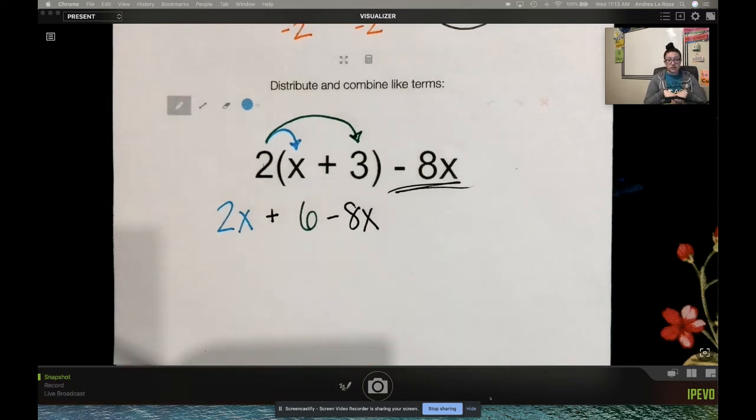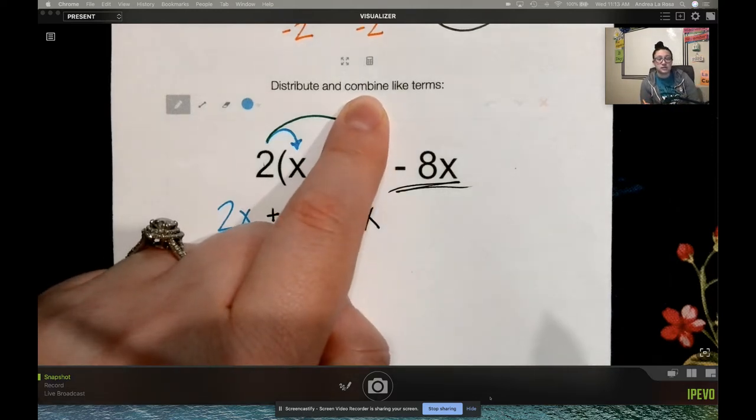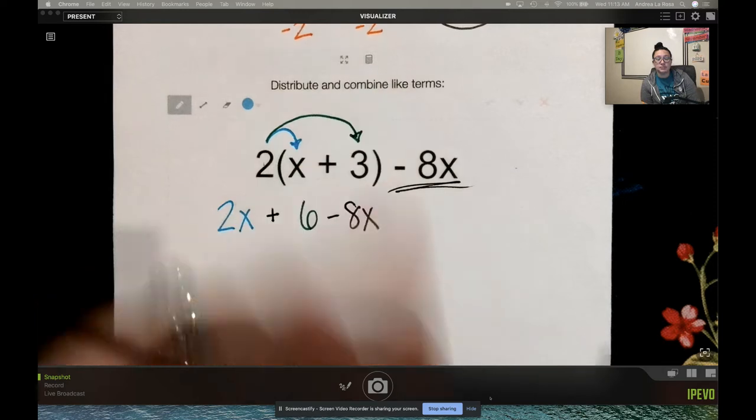So now that I'm here, I've done the distribution, now I need to combine my like terms. I have to combine my like terms.